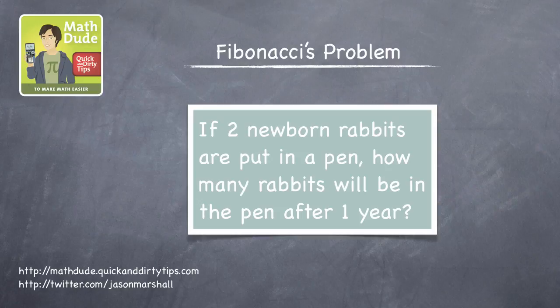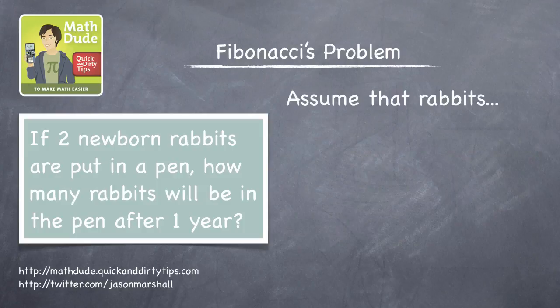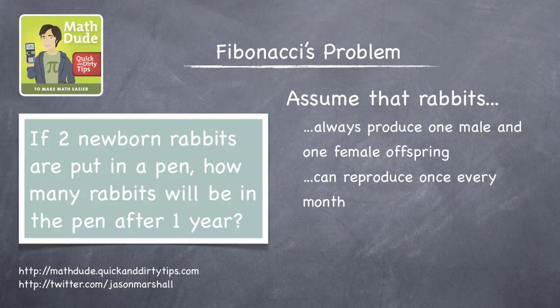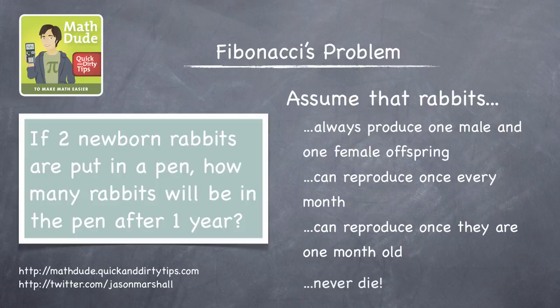To answer his question, Fibonacci wanted us to assume that rabbits always produce one male and one female offspring, that they can reproduce once per month, that they can start to reproduce when they are one month old, and that rabbits never die.